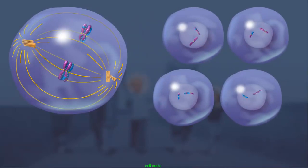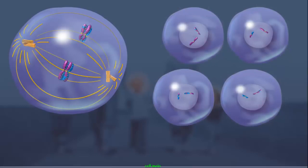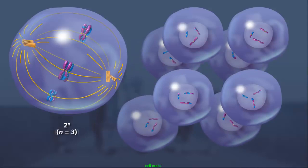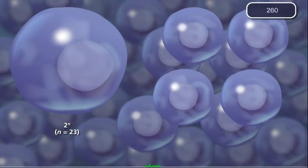This process, called independent assortment, produces four genetically distinct haploid gametes. As the total number of chromosomes increases in an organism, the number of genetically distinct gametes increases by 2 to the nth power. This means an organism with n equals 3 can produce eight unique gametes. For humans where n equals 23, there are 2 to the 23rd power unique gametes formed, or over a million different possible combinations.